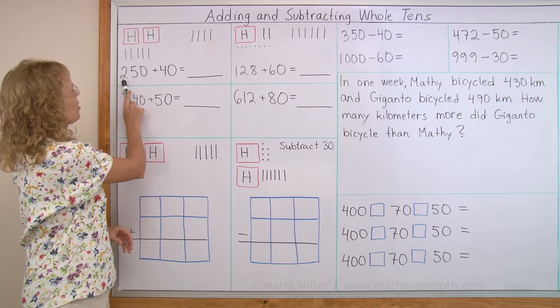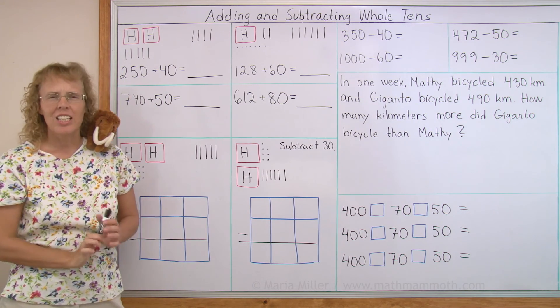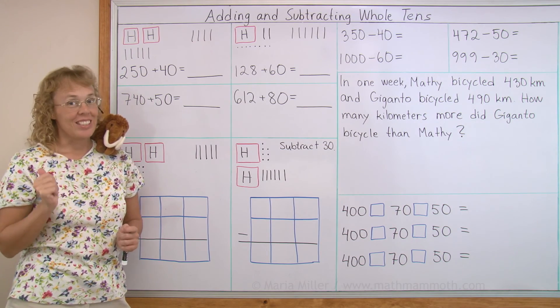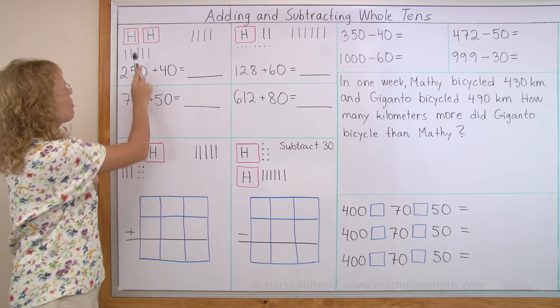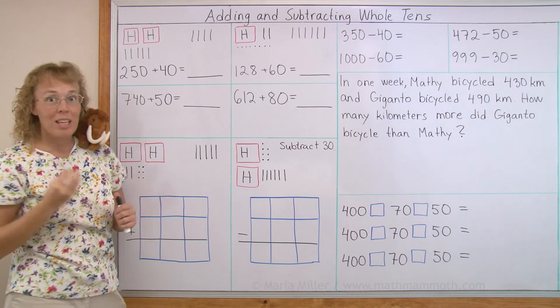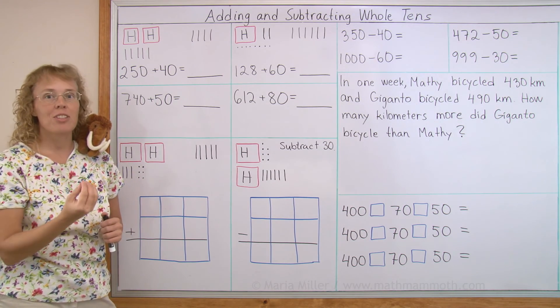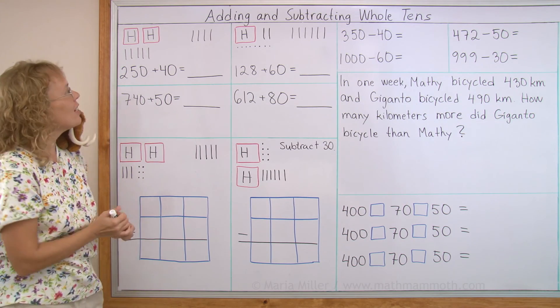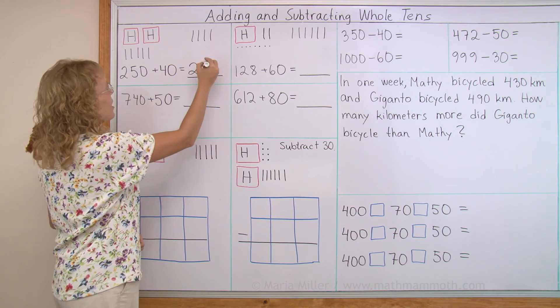My first example is 250 plus 40. You might find it an easy problem, right? Basically we have 200 here and 50 and 40, and we add those tens. The 50 and 40 makes 90, of course, and so we get those two hundreds there and 90.